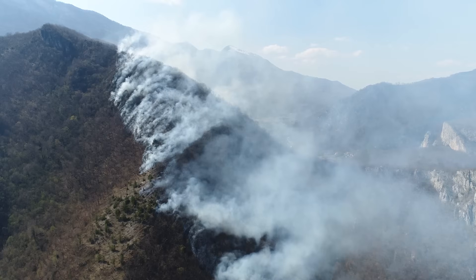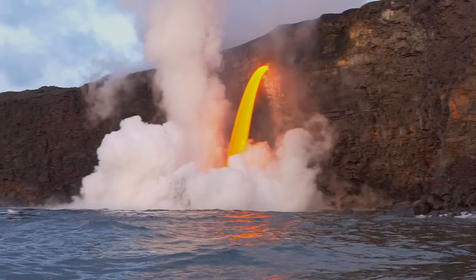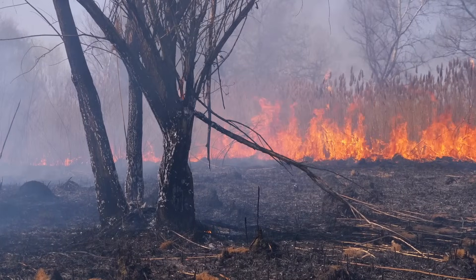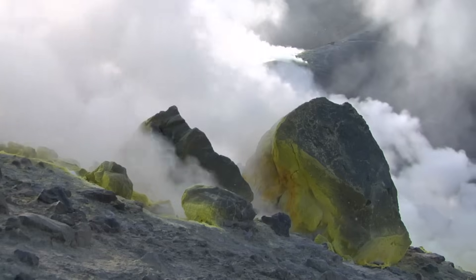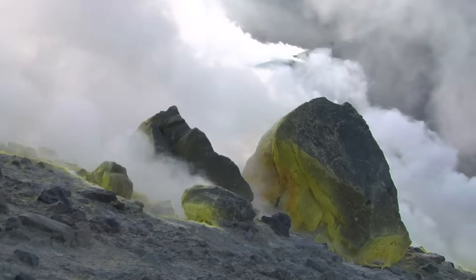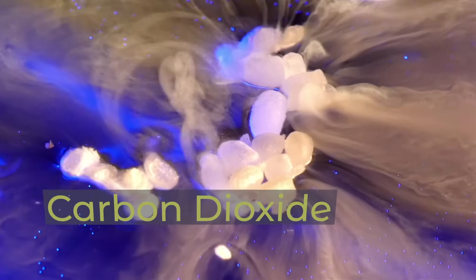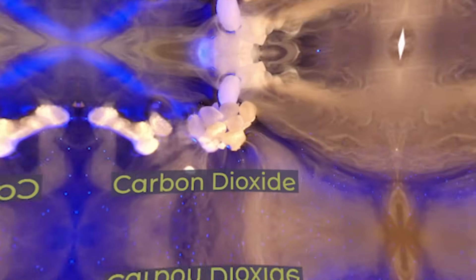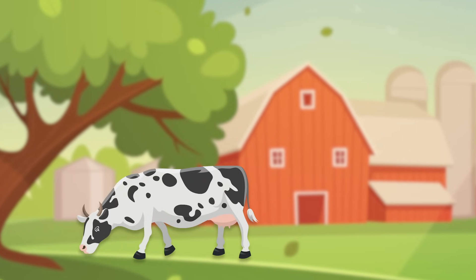Pollution can be caused naturally. Natural pollution may come from volcanoes, forest fires, windstorms, pollen in the air, and other sources in nature. Even the air we breathe out, carbon dioxide, is a form of pollution. And did you know that gas the cows and other animals release pollutes the air too?